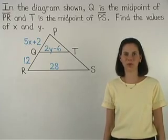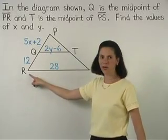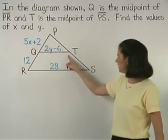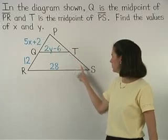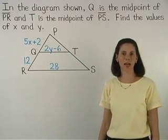In this example, we're given that Q is the midpoint of segment PR and that T is the midpoint of segment PS, and we're asked to find the values of X and Y.